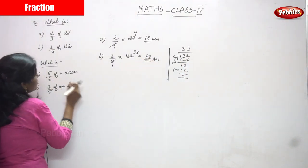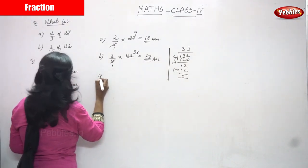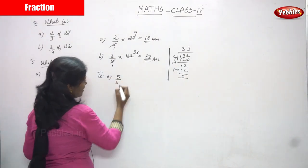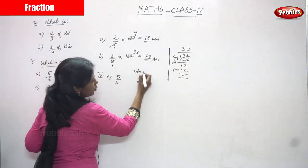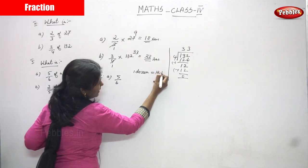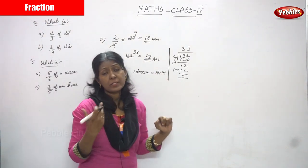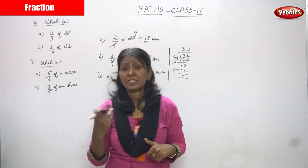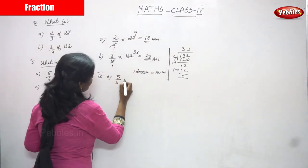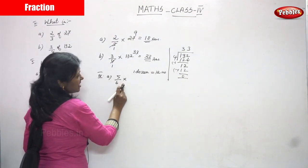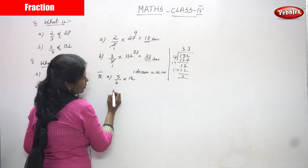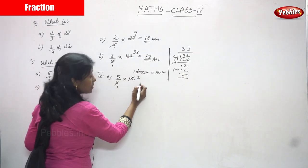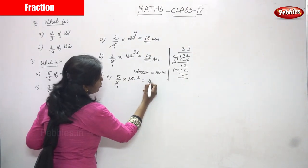Next: what is 5 by 6 of a dozen? This is subdivision A. 5 by 6 of a dozen — you already know that 1 dozen equals 12. One dozen of apples is 12 apples, one dozen of bananas is 12 bananas. So you write: 5 by 6 of means put a multiplication sign, then write 12. Cancel by 6: 6 divided by 6 gives 1, and 12 divided by 6 gives 2. So 5 into 2 gives 10.